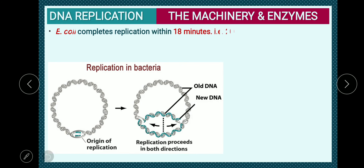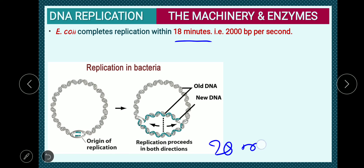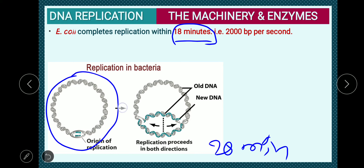E. coli completes its replication within 18 minutes. Keep in mind that the complete generation time of one E. coli cell is 20 minutes. So the DNA replicates within 18 minutes, converting one copy of the genome into two copies of the DNA.